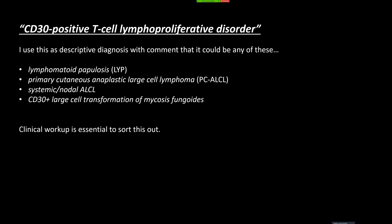How I sign these out: I'm lucky to work with cutaneous heme-path experts, but what I've done is put the line diagnosis as 'CD30-positive T-cell lymphoproliferative disorder,' because all of these things can look the same microscopically — LyP, primary cutaneous ALCL, systemic nodal ALCL involving the skin if it's ALK-negative, and even CD30-positive large cell transformation of mycosis fungoides. On a biopsy alone with a sheet of ugly CD30-positive cells, it's essentially impossible to sort those out. The clinical pieces all have to be put together.